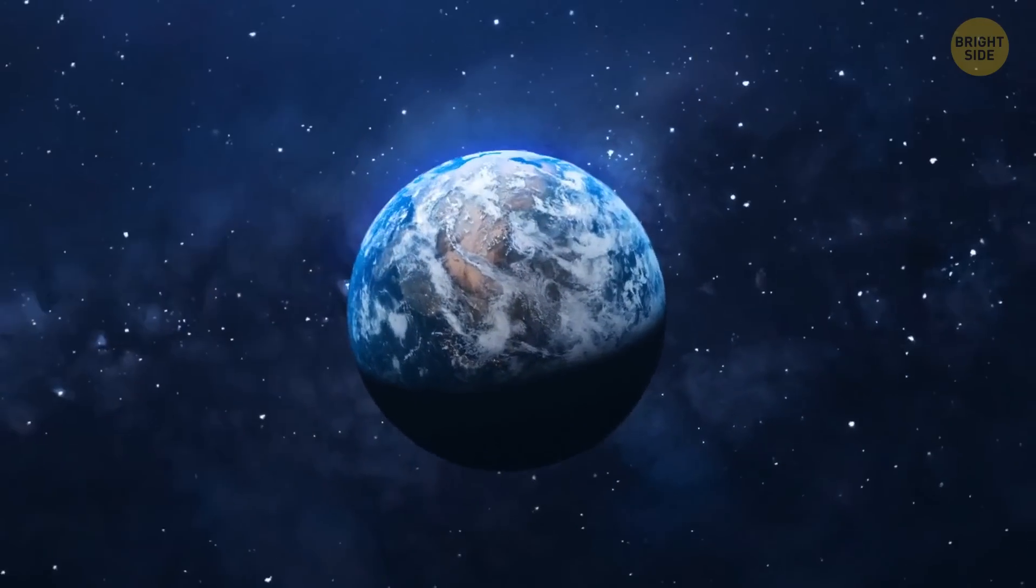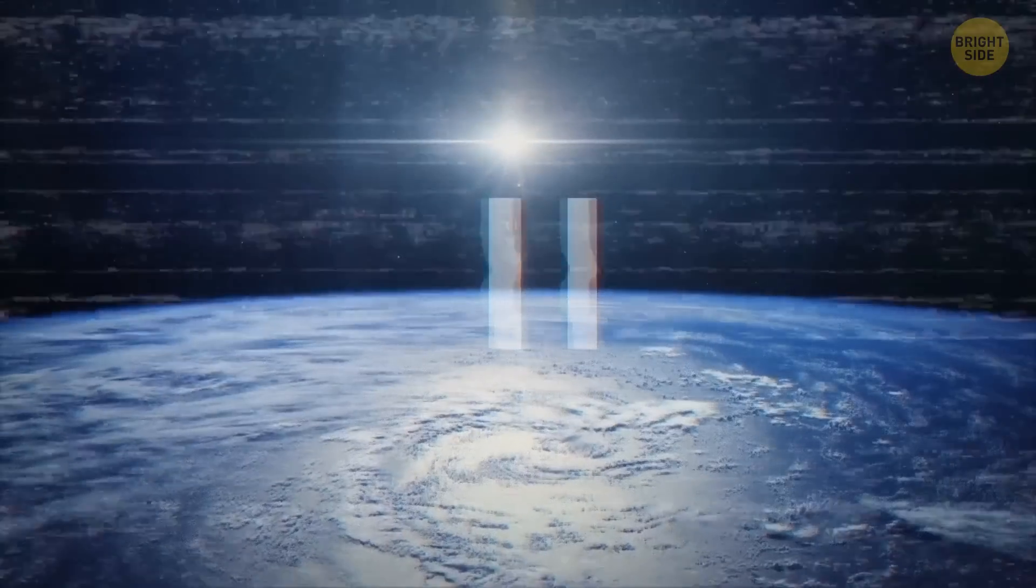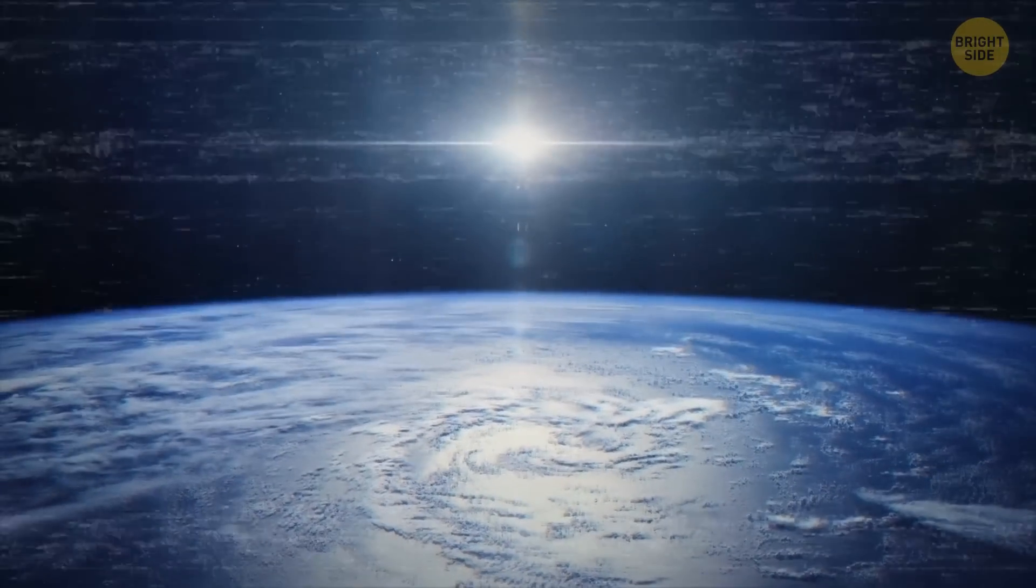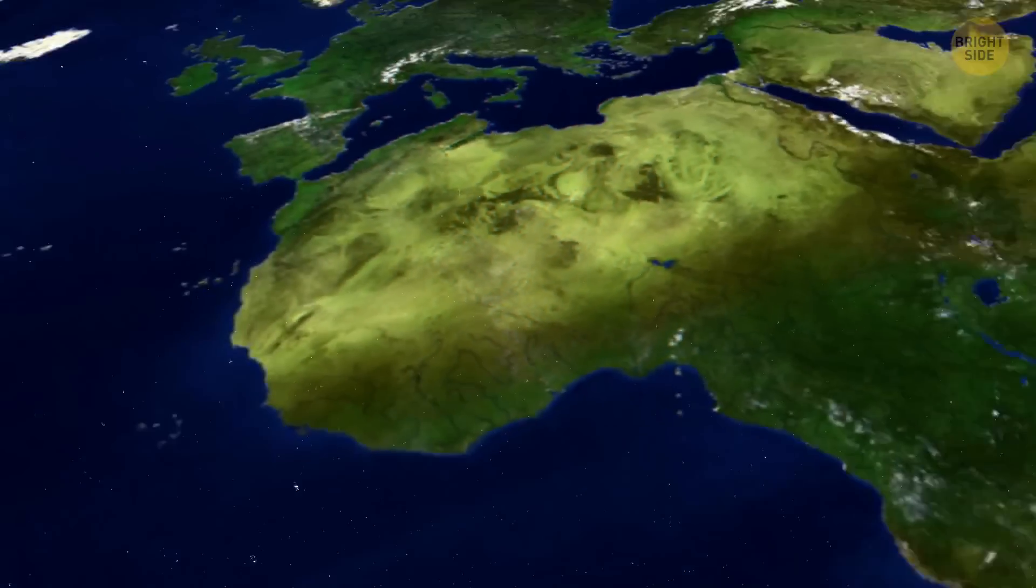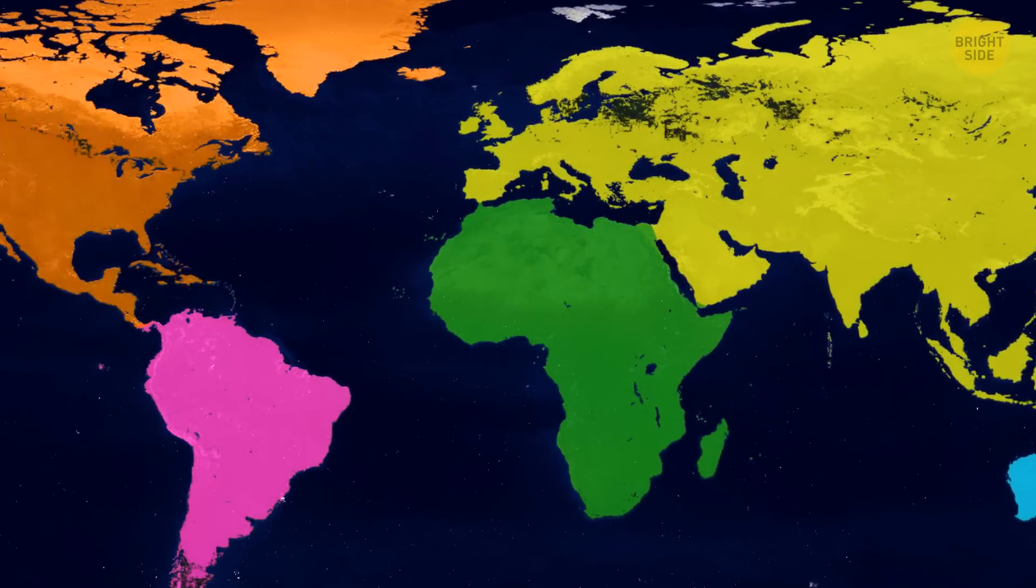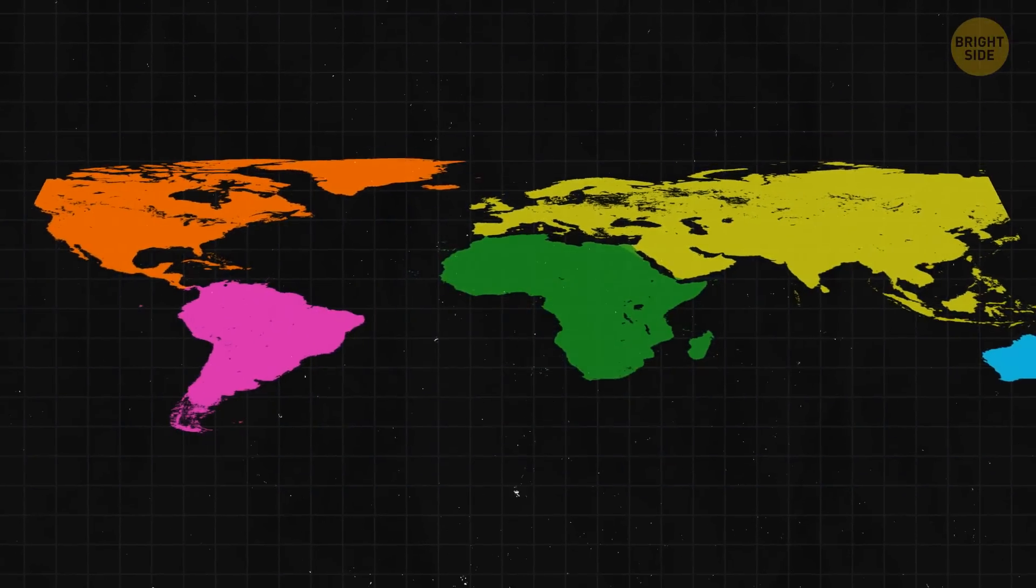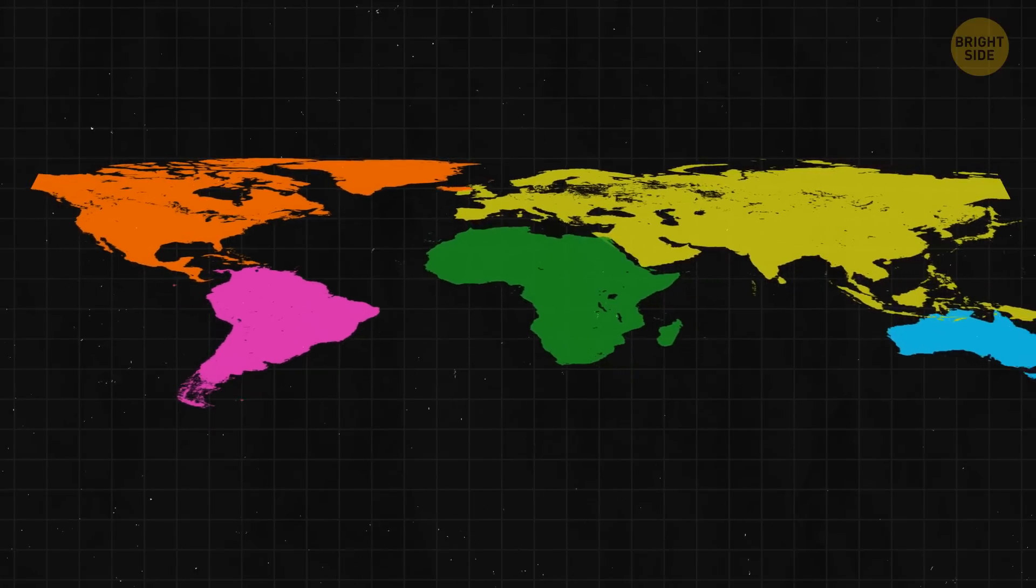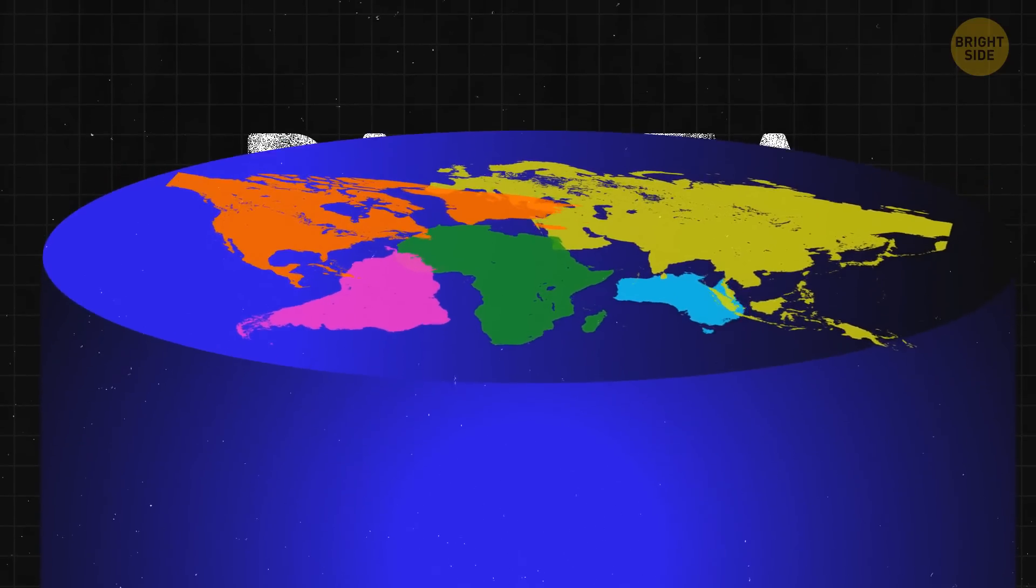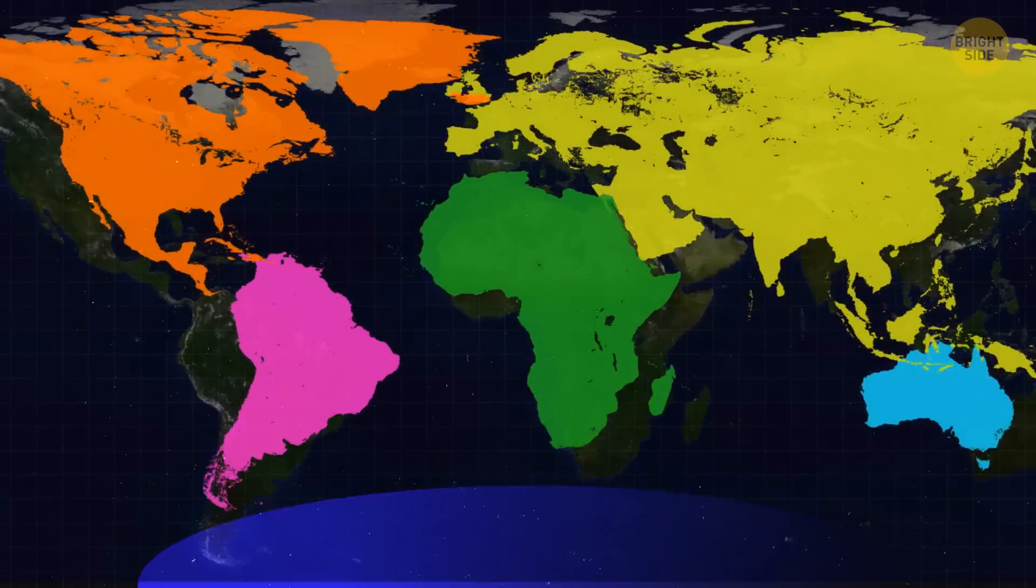Our planet will also suffer a lot of changes in the future. If we could travel some millions of years ahead, we might not recognize our planet's maps at all. Currently, Earth has seven continents, but it hasn't always been that way and it will most likely change in the future too. About 310 million years ago, Earth had this megacontinent called Pangaea. Around 180 million years ago it started to break apart.